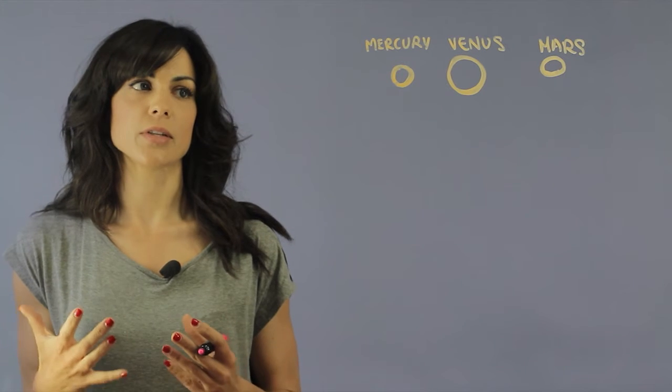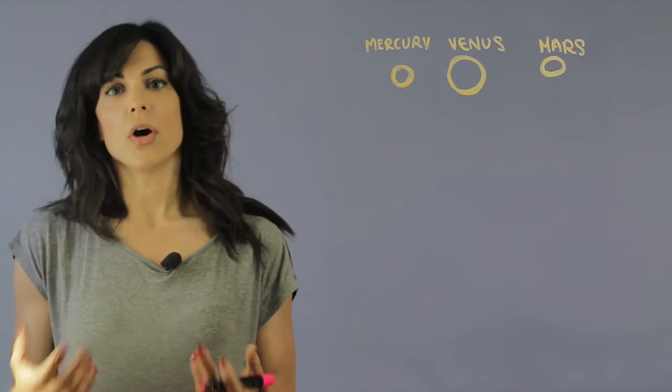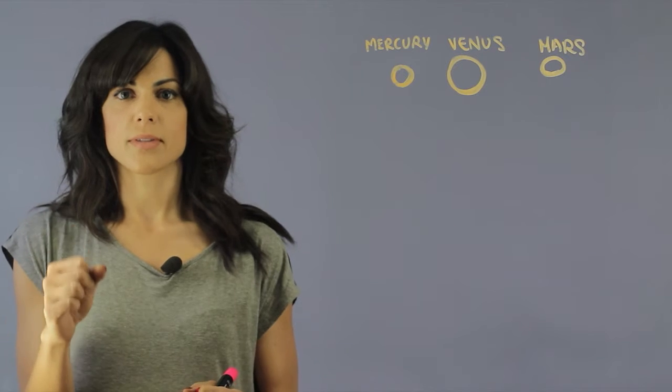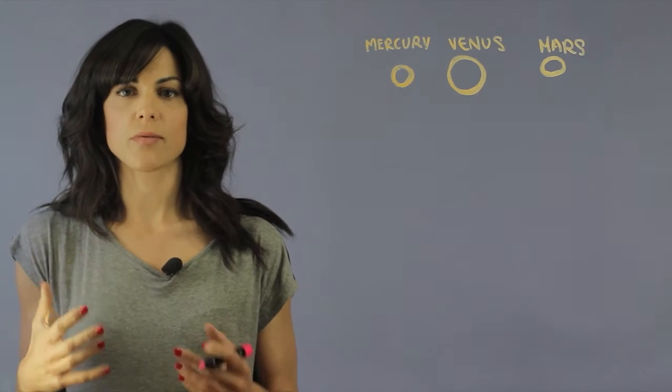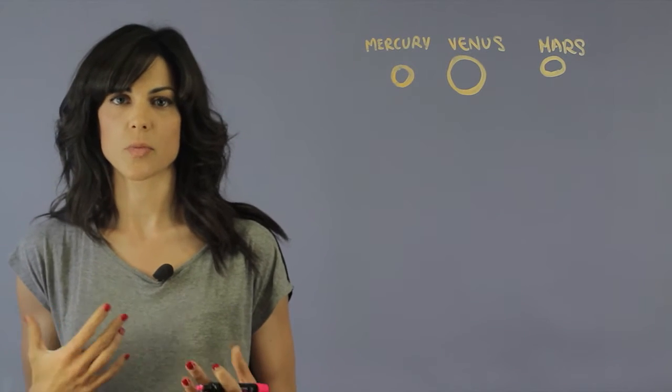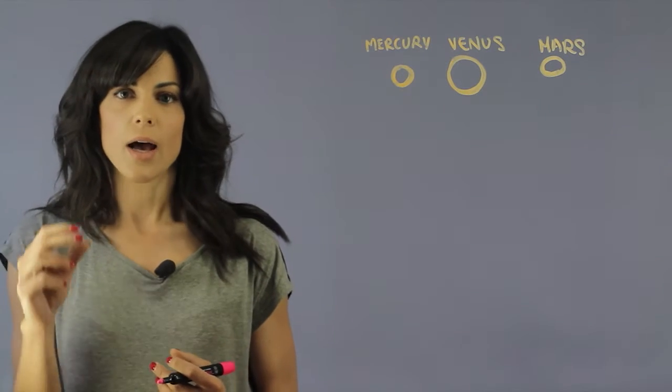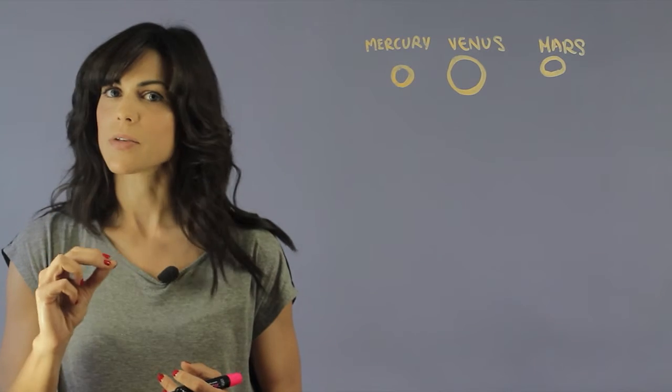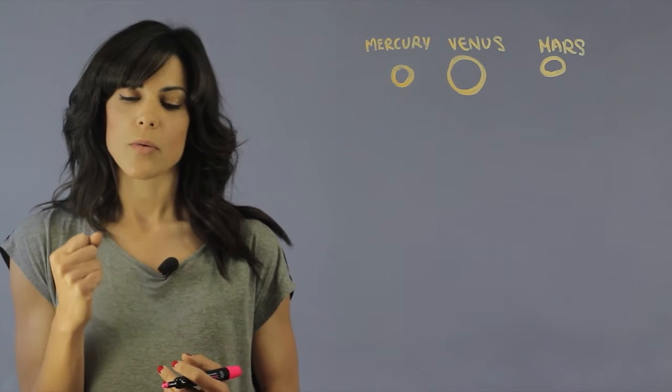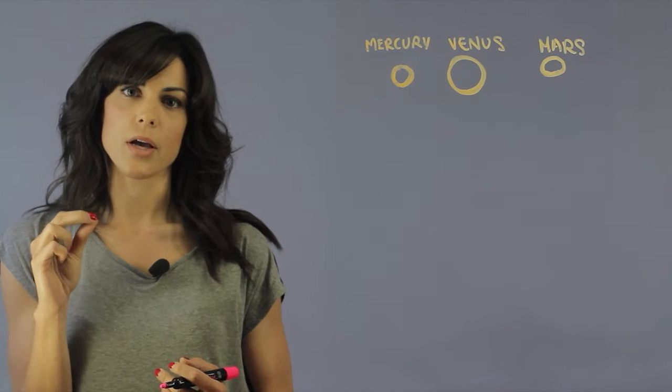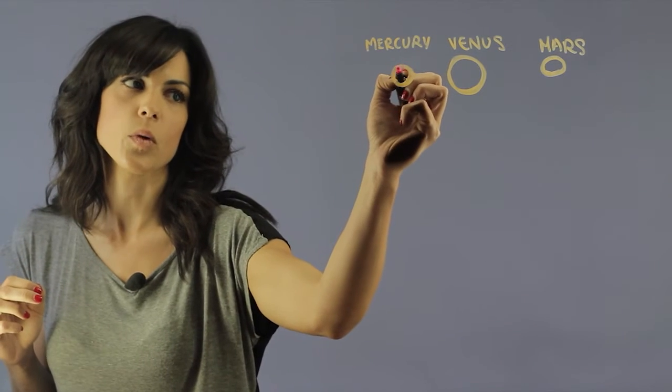Mercury at first glance is no, because you're so close to the Sun the temperatures definitely exceed 100 degrees Celsius, which is the boiling temperature. Surprisingly, we actually found a little bit of icy water in a crater at the pole of Mercury.